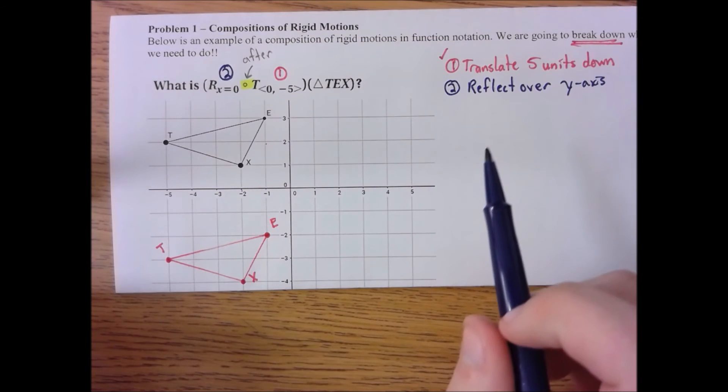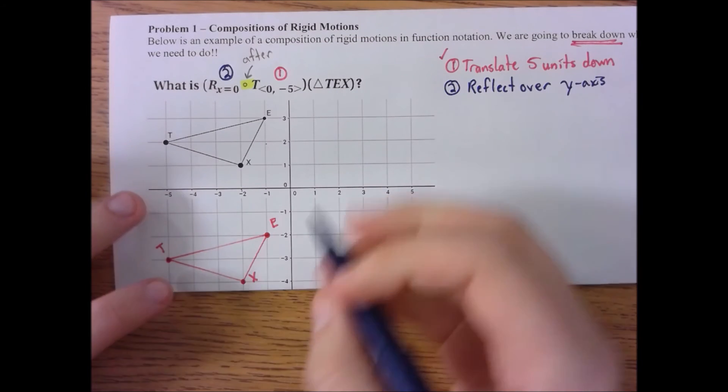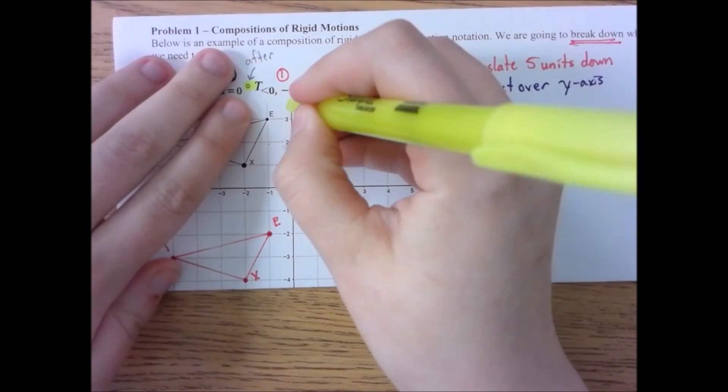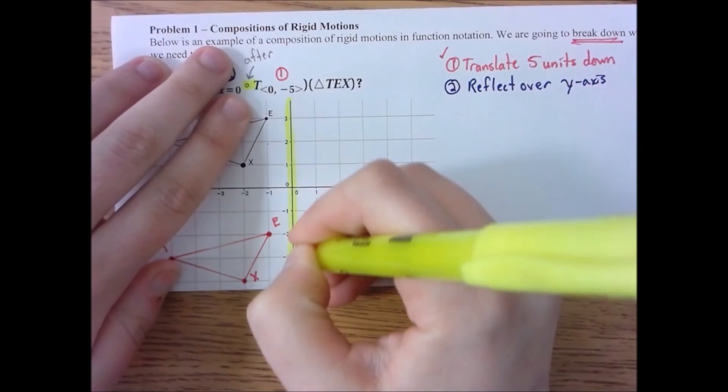So now we need to do the second transformation, reflecting over the y-axis, and tell you what I'm going to do. I'm going to highlight the y-axis real quick. That helps me when I'm reflecting.